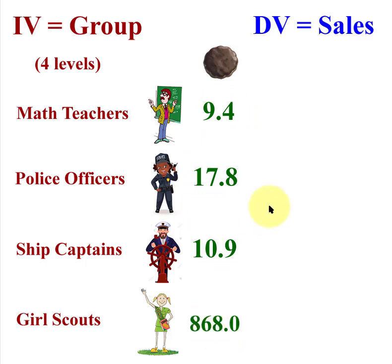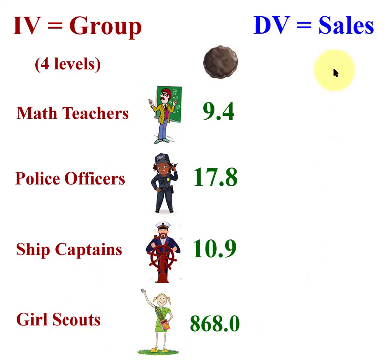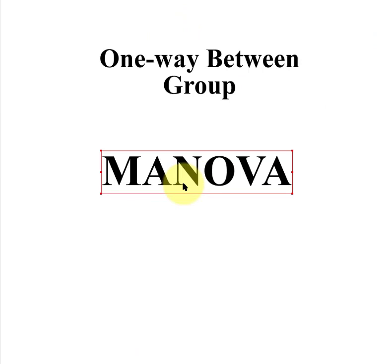There's going to be an obvious significant difference somewhere in this ANOVA — you're going to get an omnibus result. But what makes it become a MANOVA? The difference between an ANOVA and a MANOVA is that you have more than one DV.